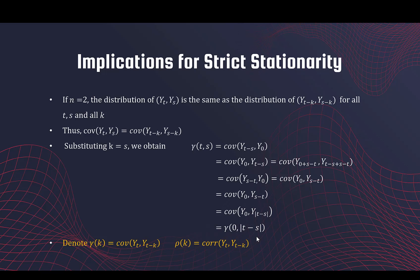So this is the notation we're going to use. If we have a strictly stationary time series, instead of writing gamma(t,s) we write gamma(k), where gamma(k) means the covariance between yt and yt-k — the distance between the two time points is k. Similarly, the autocorrelation is referred to as rho(k), meaning the correlation between yt and yt-k. When dealing with stationary time series, we refer to the autocovariance and autocorrelation function only by using lags.